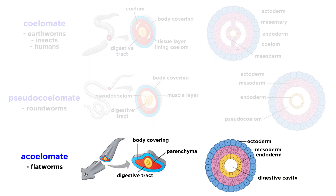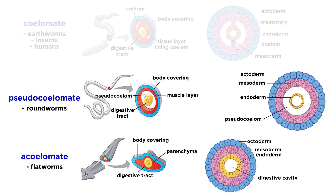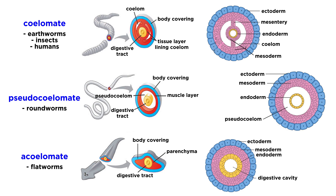Some triploblastic animals, like the flatworms, are acoelomates, meaning they have densely packed cells called parenchyma. These cells are not specialized for any particular function. Other animals, like the roundworms, are pseudocoelomates, meaning they have a body cavity that is not entirely lined by the mesoderm. They have no muscular or connective tissues around their digestive tract. Lastly, the majority of triploblastic animals — everything from earthworms to insects and humans — are considered to be coelomates, meaning they have a coelom, a body cavity surrounded by the mesoderm capable of a multitude of complex functions.